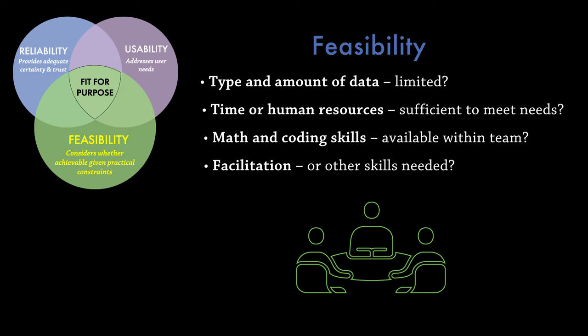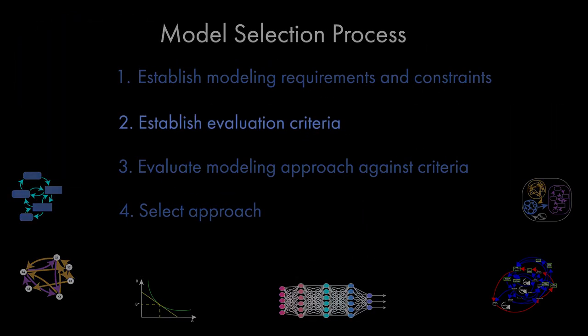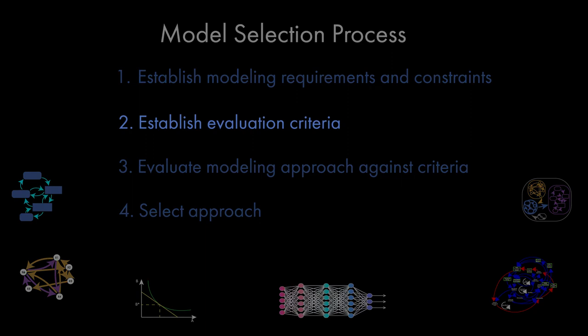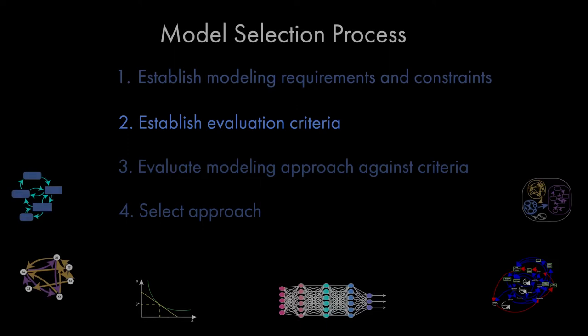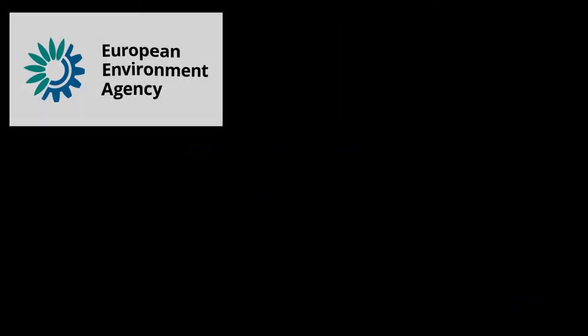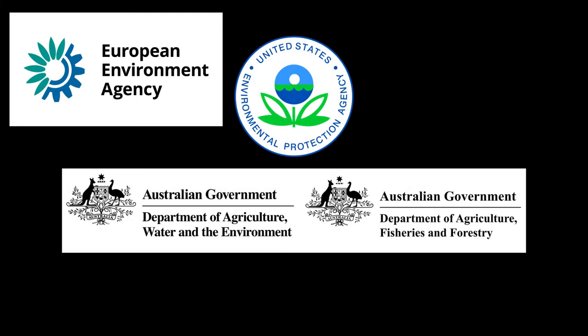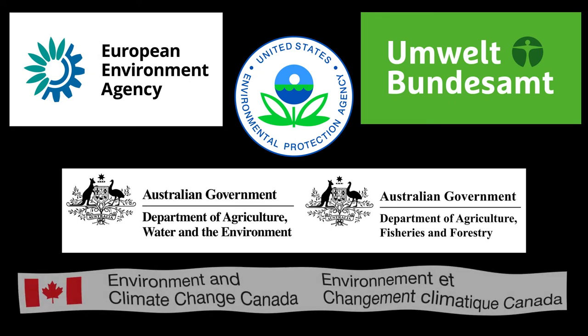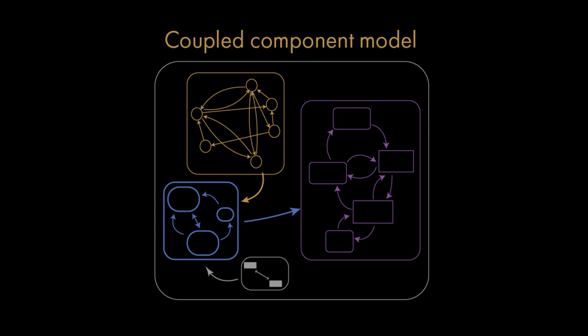Exploring these practical constraints provides opportunities for re-examining and refining the model purpose for stakeholders. The second step in the model selection process is about taking the requirements and constraints identified in the first step and turning them into criteria that we will use to evaluate alternate modelling methods. These criteria will be specific to the project and problem, and they should be ranked and prioritised in this step. For example, from the user perspective, some government departments may have a statutory requirement to use a particular established model for, say, the hydrological component of the system. Having such a requirement will immediately limit modelling options to a coupled component type approach.